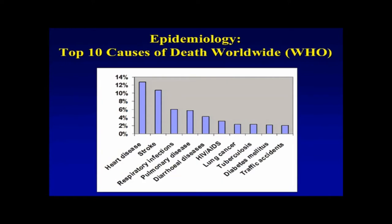Heart disease and stroke are by far the number one causes of death throughout the world. There are several infectious diseases, and about number six is lung cancer. As we've exported our sedentary and unhealthy diet lifestyle to the rest of the world, this has become the dominant disease throughout the world.